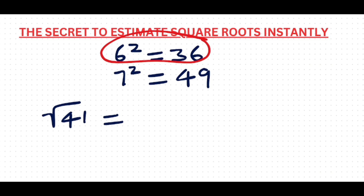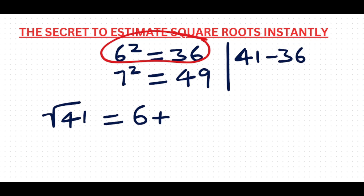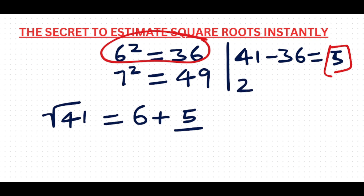So you write 6, plus a fraction. To find the fraction: we are finding the square root of 41, so you write 41 minus the nearest perfect square, which is 36. So 41 minus 36 equals 5. That 5 is the numerator of the fraction, so 5 goes here divided by the denominator.